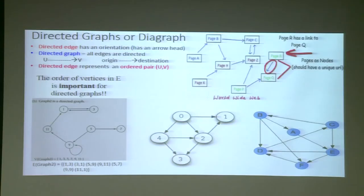In a directed graph, directions and order of vertices are very important. As you can see, we use circular brackets — this is an ordered pair of a directed graph, represented with round brackets.